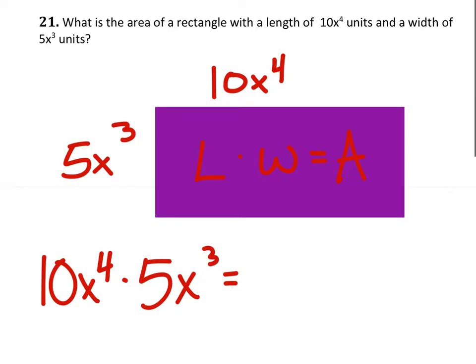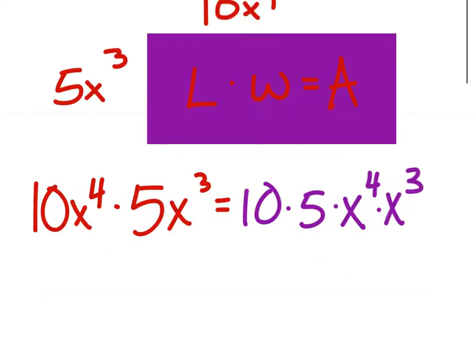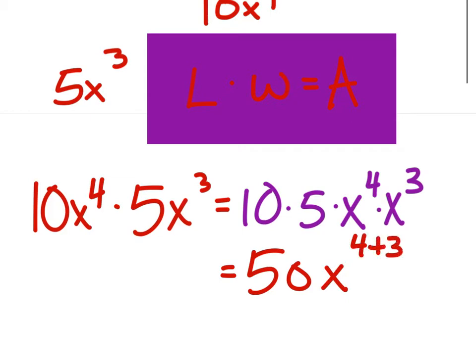So we use the commutative property of multiplication. We have 10 times 5 times x to the power of 4 times x to the power of 3. And that gives us 50x to the power of 4 plus 3, which is just 7. You could write units if you want.